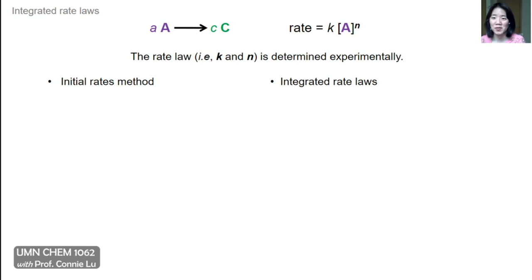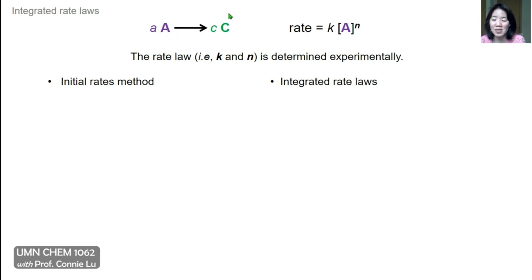In this video we're going to focus on integrated rate laws. Integrated rate laws are a complementary method to determine what the variables k and n are in the rate law equation. This is for a simple reaction where reactant A is converted into product C, and we can generally write a rate equation where rate equals the rate constant times the concentration of reactant A raised to the nth power, where n is the reaction order.